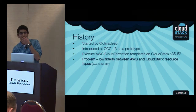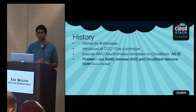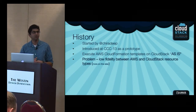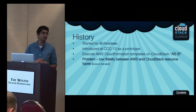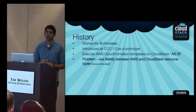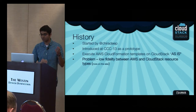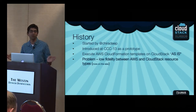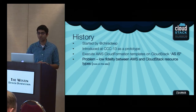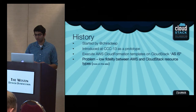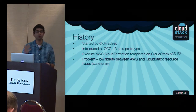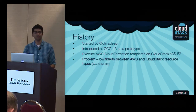A little bit of history: the Stactician project was started by Chirideep sometime last year. He introduced it at CCC as a prototype. The main goal was trying to execute Amazon CloudFormation templates on CloudStack as-is. Amazon publishes many templates for common applications like LAMP stack, WordPress, Zendesk, RedMine. We started by trying to execute those templates as-is on CloudStack, but ran into issues — particularly very low fidelity between AWS and CloudStack resource types — and that's how this project started gaining traction and Stactician came to be as it is today.